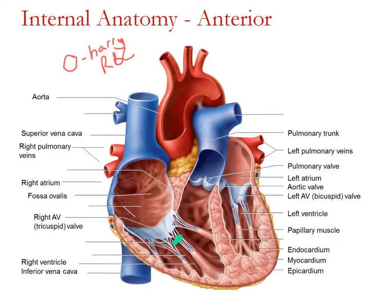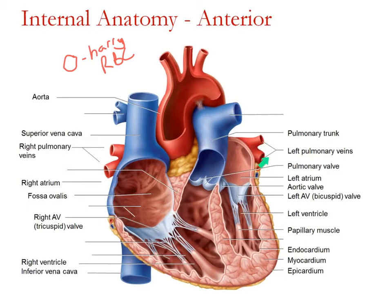From the right ventricle, the blood's next step is to push up through the pulmonary valve into the pulmonary trunk. This is an artery — arteries take blood away — so even though it's blue, that just means it's low in oxygen. Blood travels via pulmonary arteries to the lungs, where diffusion occurs: CO2 is released and oxygen is picked up in the blood.